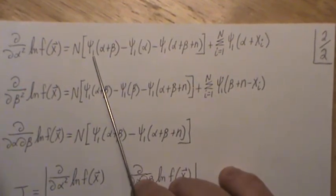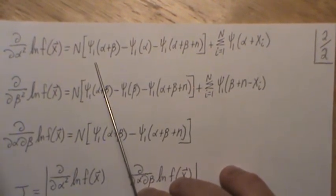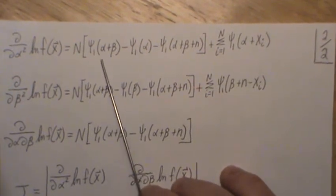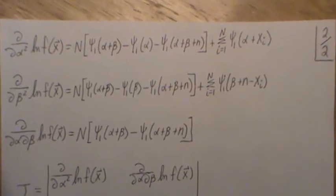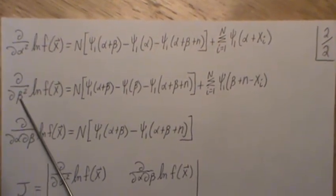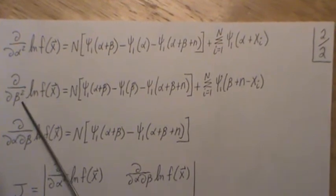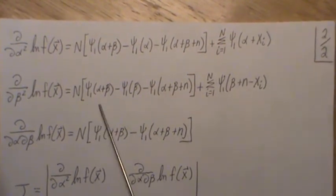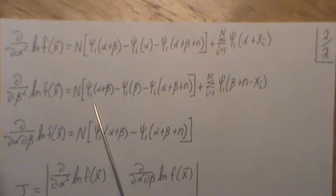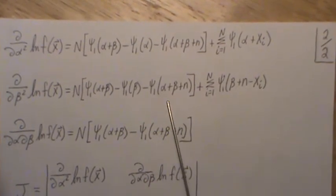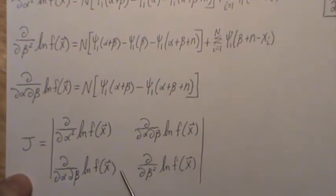The derivative of a digamma is what's called a trigamma, and these are all functions in R — I'll show how to do this numerically in R in the next video. So you end up with trigamma functions, which are the derivative of a digamma. Similarly, when we take the partial with respect to beta of the partial with respect to beta of the log likelihood — the second partial — all the digamma terms become trigamma terms. The result is the sum of this trigamma.